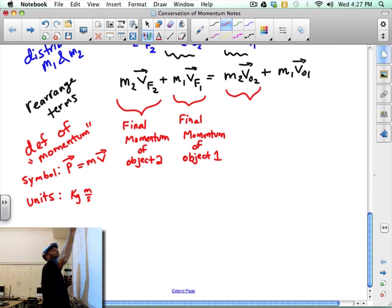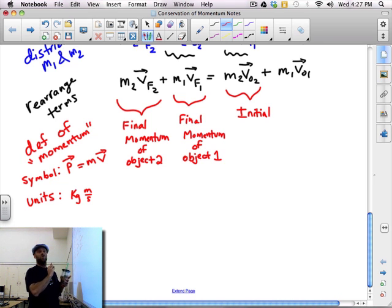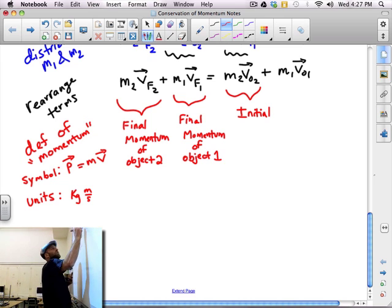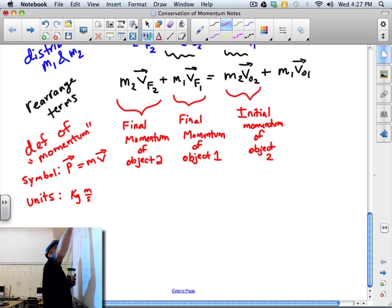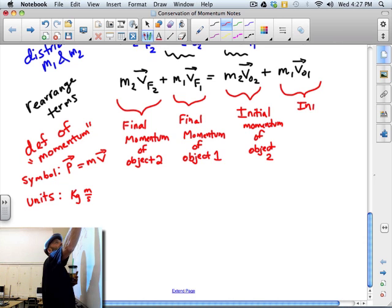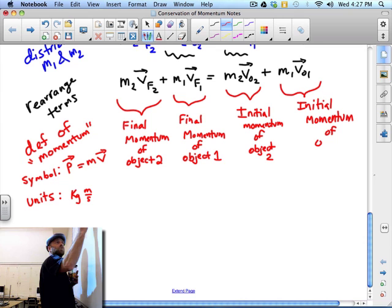This one here is going to be initial momentum because that's my initial velocity there. So initial, when I say initial and final, I'm talking about before and after collision. So this is initial momentum of object 2, and this is initial momentum of object 1.